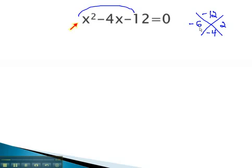Because we have a 1 in front of x squared, we can use those numbers in our factors. x minus 6 times x plus 2 equals zero.